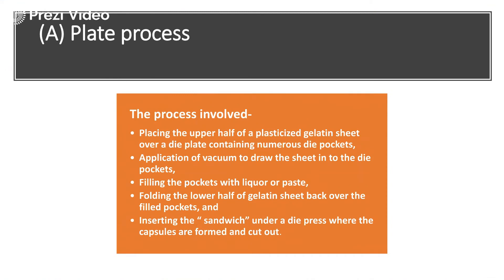Soft gelatin capsules are basically made up of sheets of soft gelatin where the plasticizer to gelatin ratio is large — 0.8 to 1. The plate process was initially developed and is one of the oldest processes. It was very simple, comprising of placing one half of the plasticized gelatin sheet on a die plate.